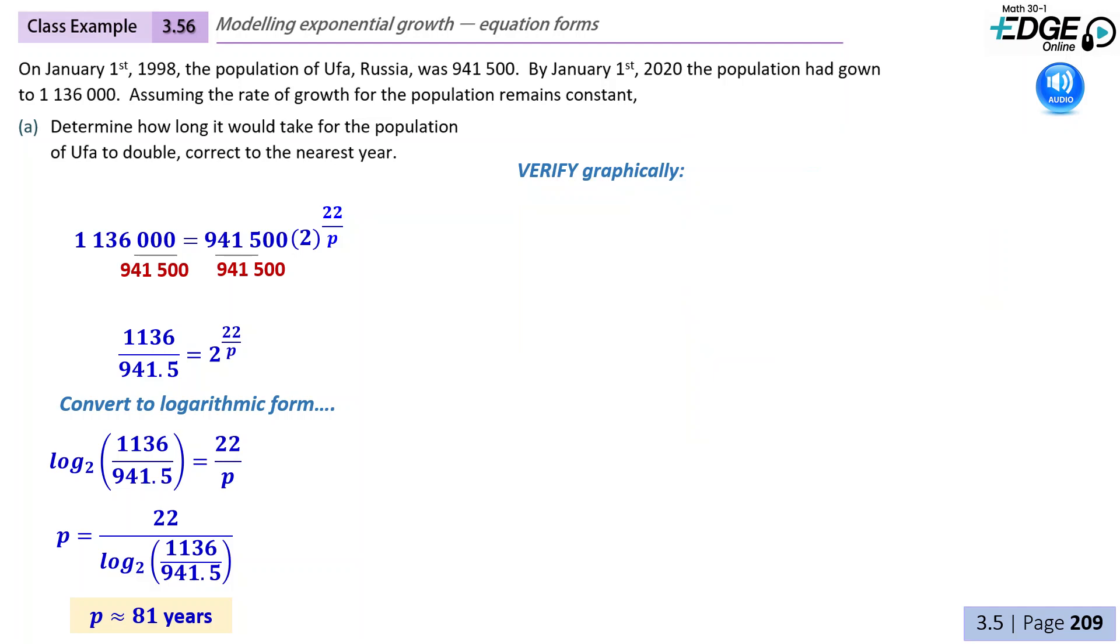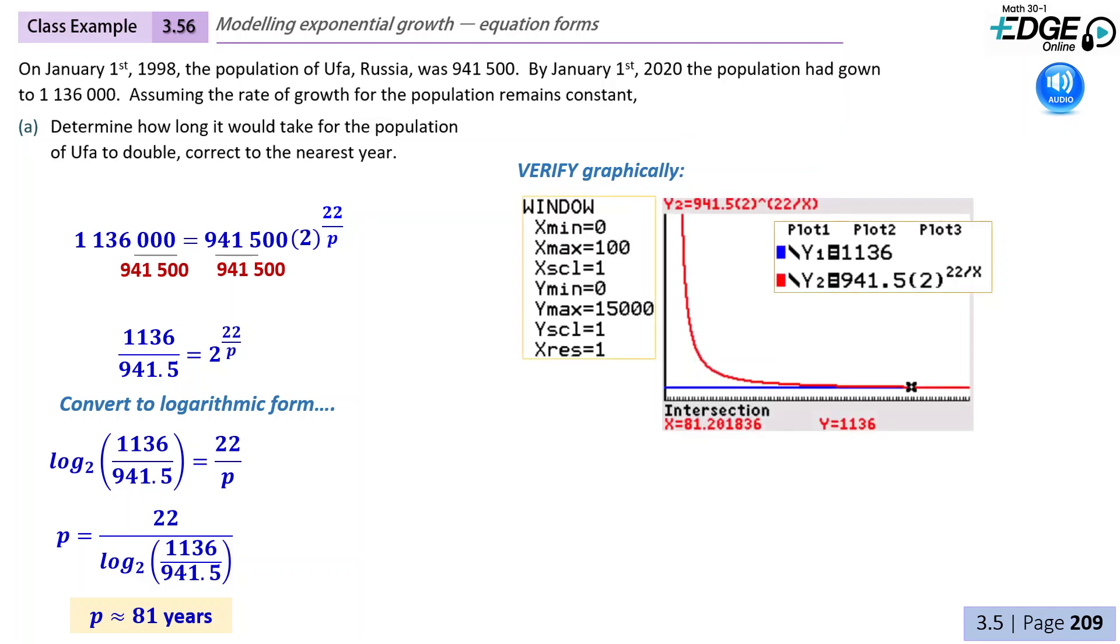Now we can verify graphically. So what we can do here is graph the left side and the right side equation. But you may notice in my picture that the numbers are slightly different than our original numbers. And that's because we could simplify that up a little bit. We don't need to use such large numbers. So a way of just making those numbers a little more manageable for our window settings would be to just divide both sides by a thousand.